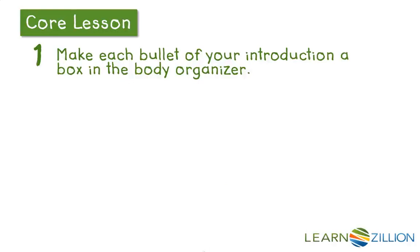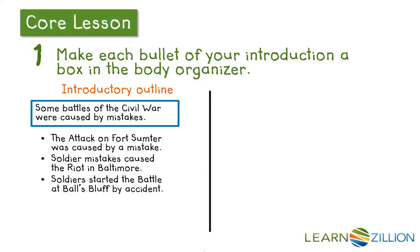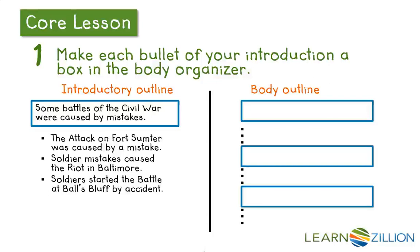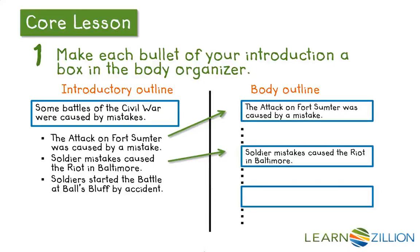First, make each bullet of your introduction a box on the body organizer. I'm going to look back at my introductory outline and take each of these bullets and put it into a new box in my body outline. I have one set of boxes and bullets, another set, and a third, because I have three bullets in my introductory outline. I'll take the first point and put it in this box, take the second point and put it in the second box, and take my third bullet point and put it in the third box. Pretty simple.